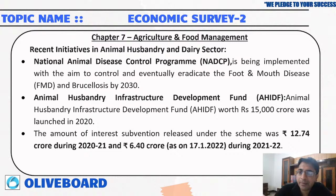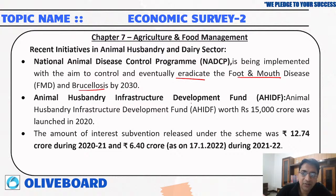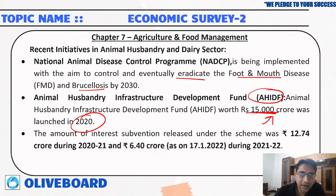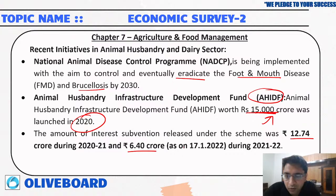The National Animal Disease Control Programme aims to eradicate foot-and-mouth disease and brucellosis by 2030. The Animal Husbandry Infrastructure Development Fund, AHIDF, was launched in 2020 with a fund of rupees 15,000 crore. The interest subvention released under the scheme amounts to rupees 12.74 crore and rupees 6.40 crore till 17th January 2022.